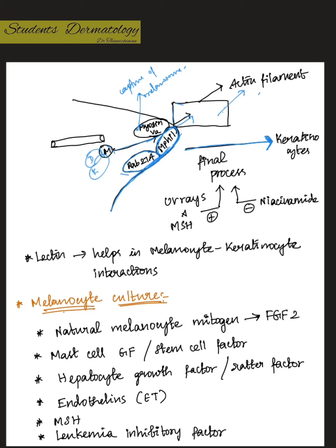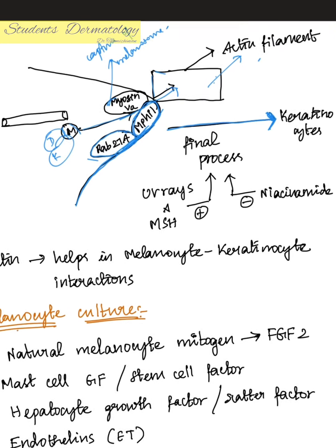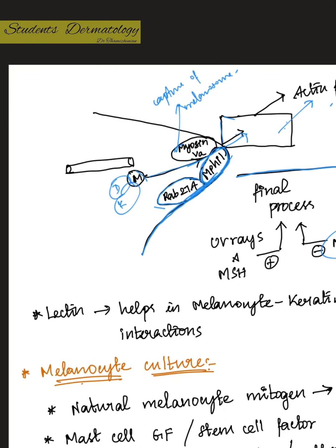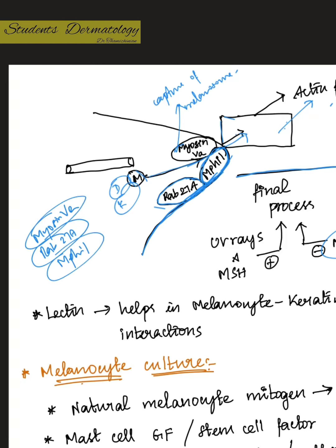This final transfer process is stimulated by UV rays and melanocyte-stimulating hormone, whereas niacinamide is found to suppress it. Any mutation in the myosin 5A, RAB27A, or melanophyllin complex can lead to Griscelli syndrome.